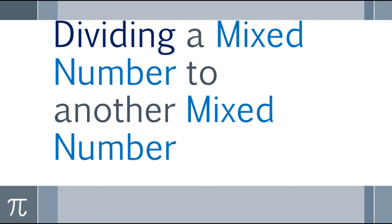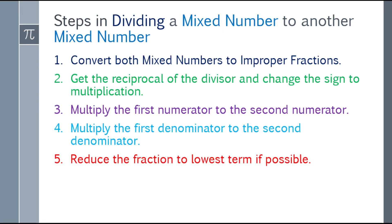Alright, so let's go to the last topic. We have five steps in dividing a mixed number by another mixed number. First, convert both mixed numbers to improper fractions. Second, get the reciprocal of the divisor and change the sign to multiplication. Third, multiply the first numerator by the second numerator. Fourth, multiply the first denominator by the second denominator. And lastly, reduce the fraction to lowest term if possible. The key difference is you must convert both mixed numbers to improper fractions.